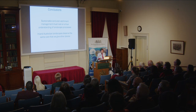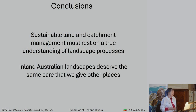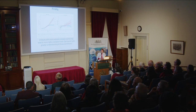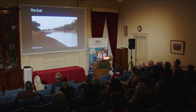Sustainable land and catchment management absolutely must rest on a true understanding of landscape processes. If we're just making things up, we're not in a good position to make good decisions about managing the landscape. Inland Australian landscapes deserve the same care we give to other places. In a future where extreme climate events are likely to occur, we're likely to get more highly variable rivers, and it would be good if we could act with a greater understanding of those conditions. Thank you so much for coming out tonight.